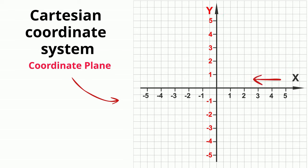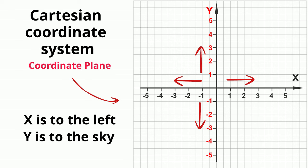The horizontal number line is called the x-axis and the vertical number line is called the y-axis. To help you remember, you can remember x is left and right, the y is up and down, so remember x to the left and y to the sky.